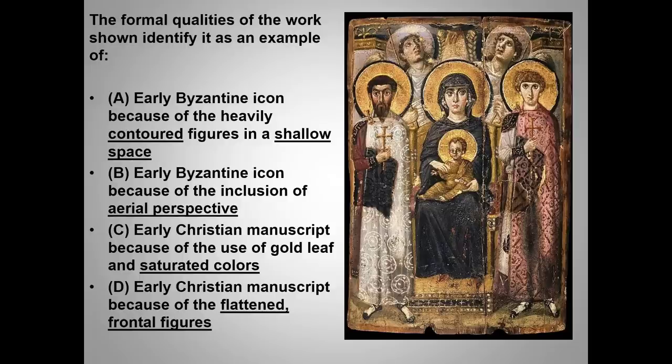Here is an example from the College Board course description. Note that the question is vocabulary-dense and wordy — I think the College Board sometimes confuses complex reasoning with complicated sentences. Before you start drowning in the word deluge and panicking, realize you've encountered all of these terms. For this question, the most important term is 'formal qualities,' meaning the question is asking about the way the work is made and the stylistic techniques the artist uses.